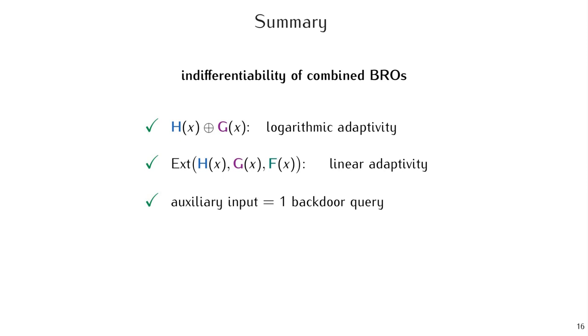Also, since auxiliary input is captured by a single initial backdoor query, indifferentiability in the BROW model implies indifferentiability with independent auxiliary input. I refer you to the paper for definitions and feasibility results for XOR, and also a salted variant.